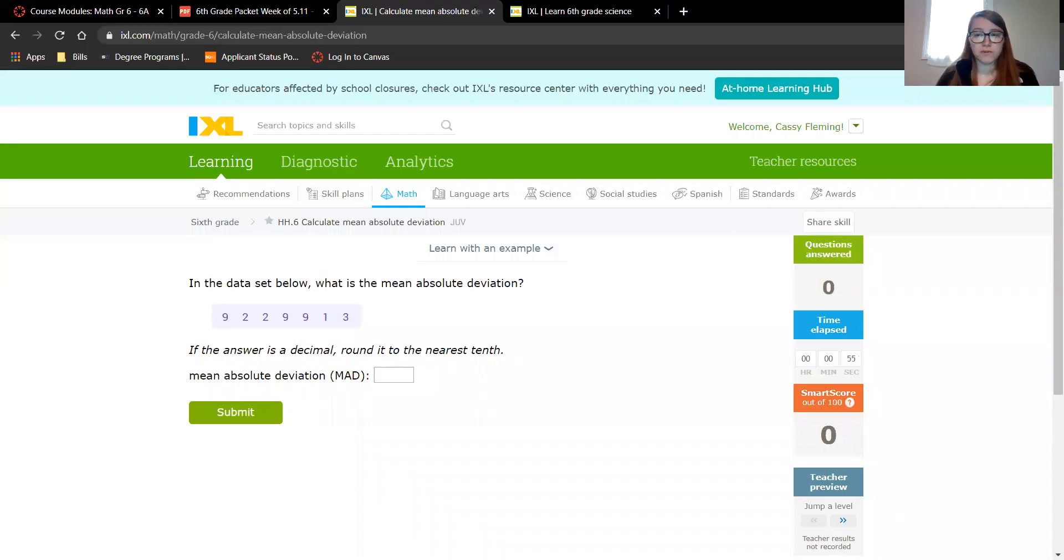These are the same type of problems, just a different format, a different look. So when we find the mean absolute deviation we have to find the sum of the absolute values from all the numbers in the data, and then that sum divided by the total number of numbers in the data is your mean absolute deviation.